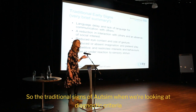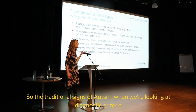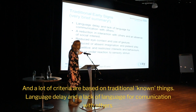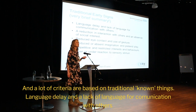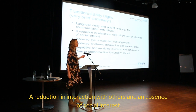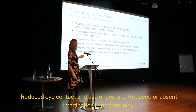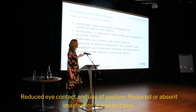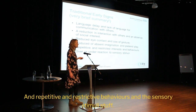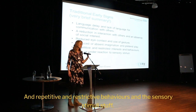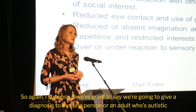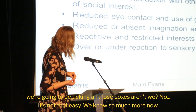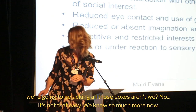The traditional signs of Autism in diagnostic criteria include language delay and lack of language for communication, a reduction of interaction with others, an absence of social interest, reduced eye contact and use of gesture, reduced or absent imagination and pretend play, repetitive and restrictive behaviours, and sensory stimuli responses. If we're going to give a diagnosis we'd be ticking all those boxes — but no, it's not that easy. We know so much more now.